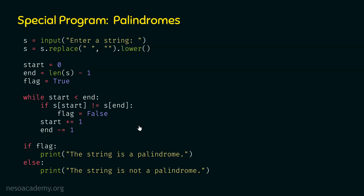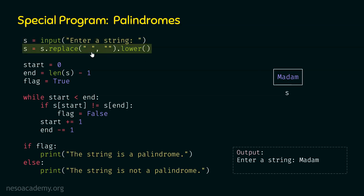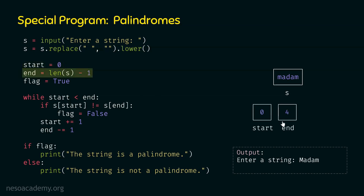Now let's execute this program line by line. First, s equals input('enter a string') — this message will be displayed and the user will provide the input. Let's say the user has provided 'Madam' where the first letter is capital, which will be converted to lowercase m because of the lower method. So s is now pointing to this string 'madam.' After applying replace and lower, we get the processed string. Then start is pointing to zero, end is pointing to four because this string has five characters and we subtract one from five. And flag is set to true.